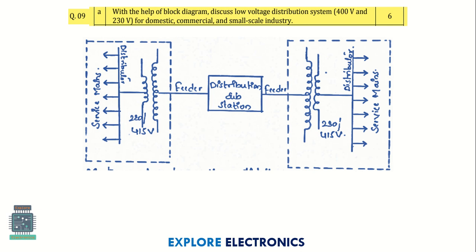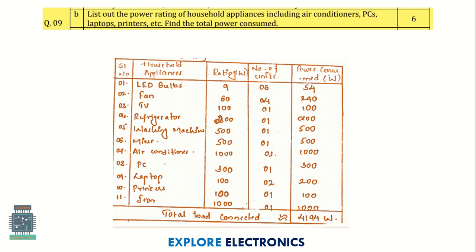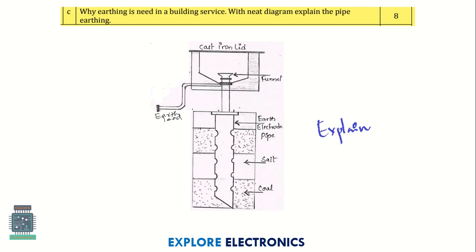Question 9 is from the last module. With the help of a block diagram, discuss the low voltage distribution system for domestic, commercial, and small scale industry — explain briefly for all three. Then list the power rating of household applications such as air conditioner and so on. Explanation is not required; they just ask you to list them out.